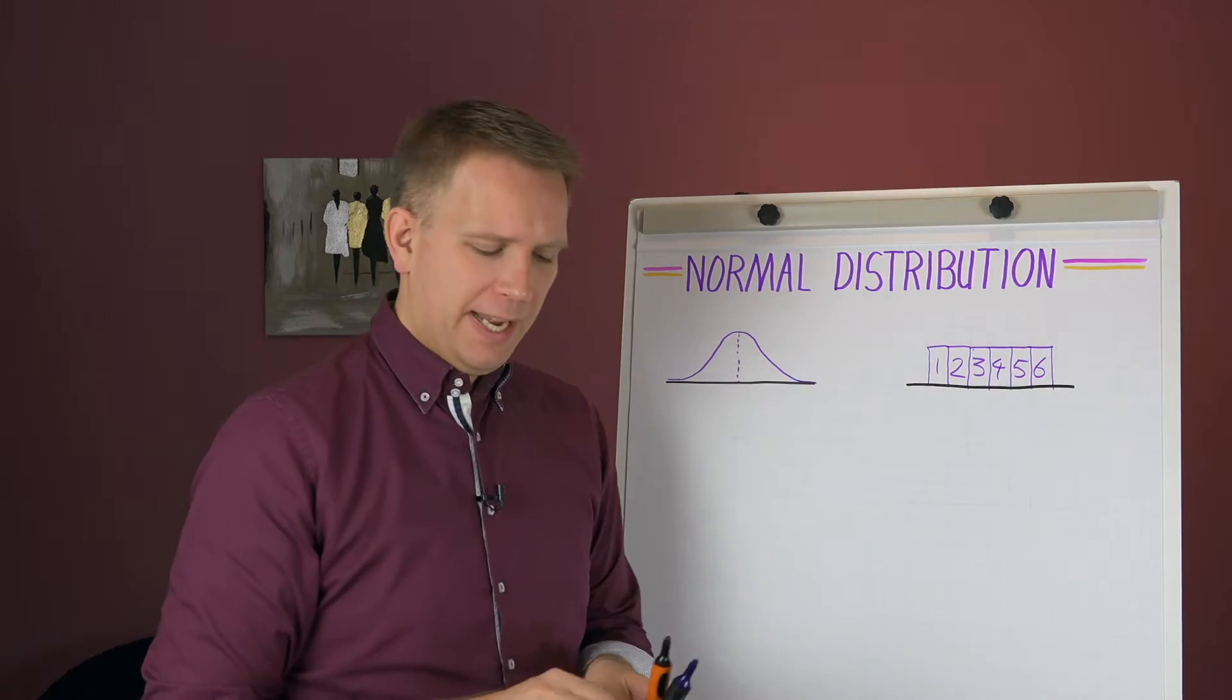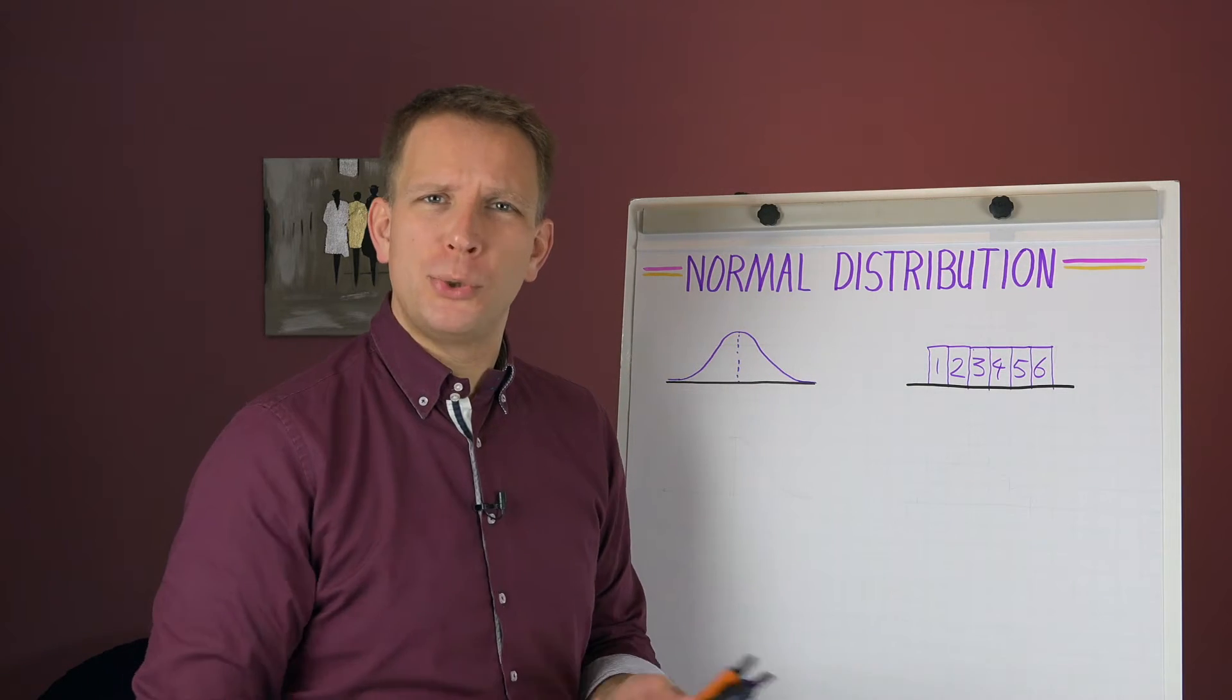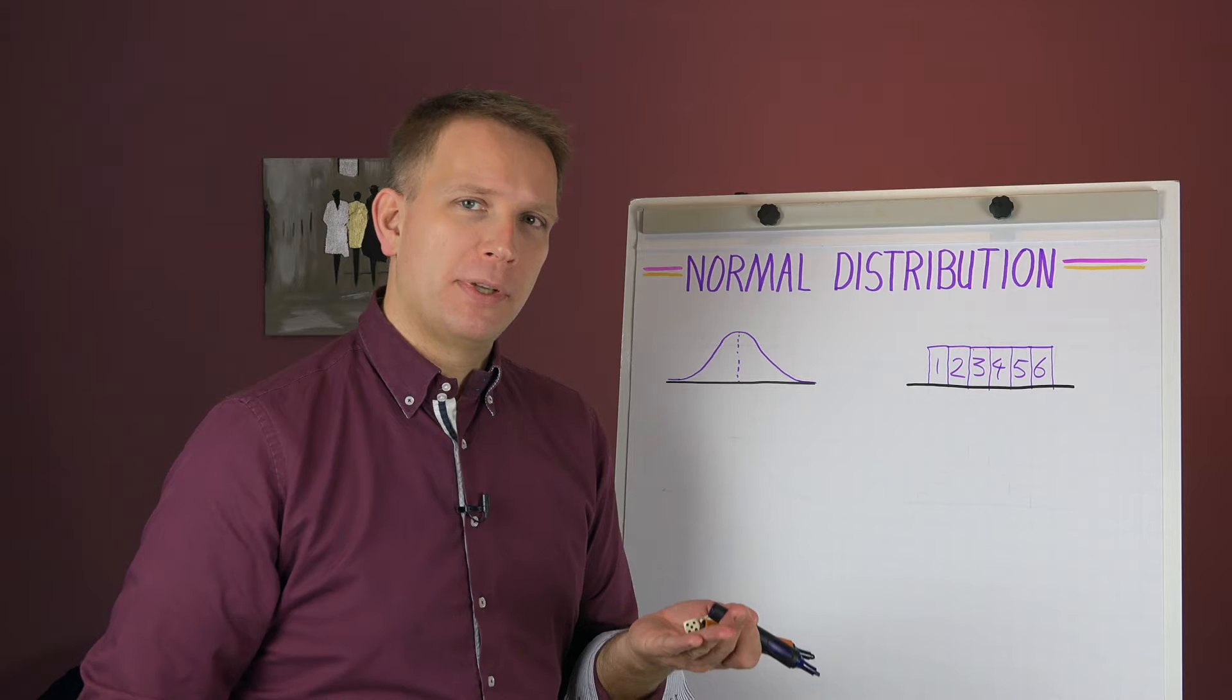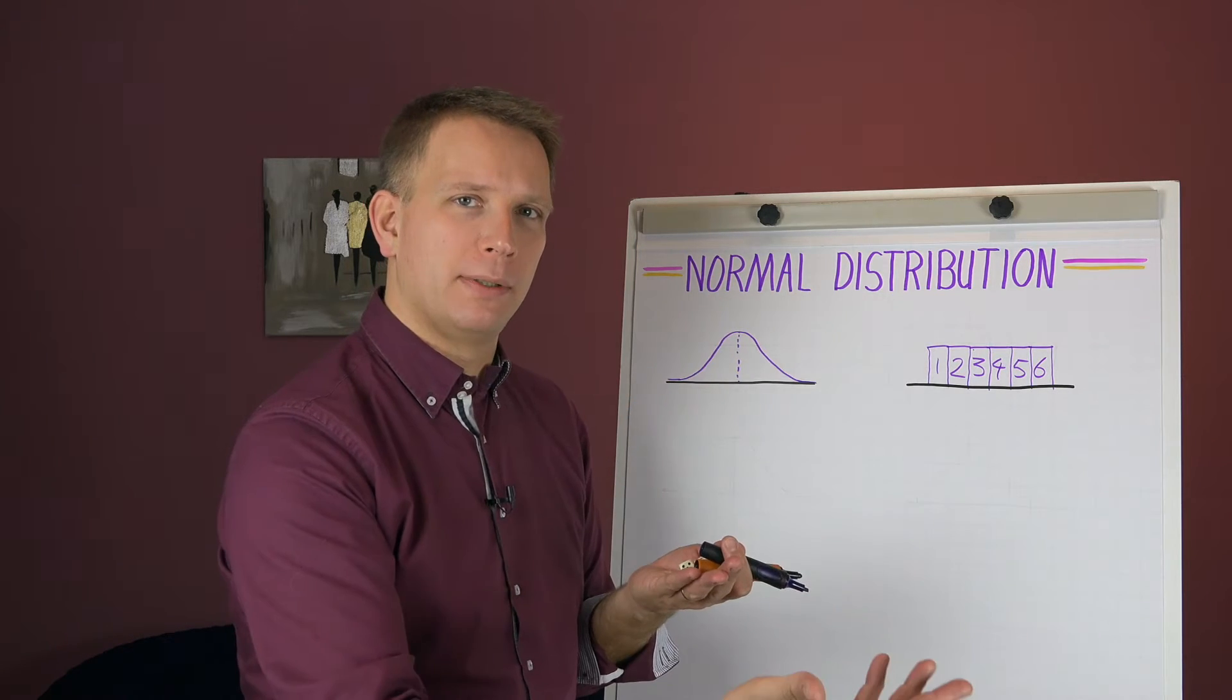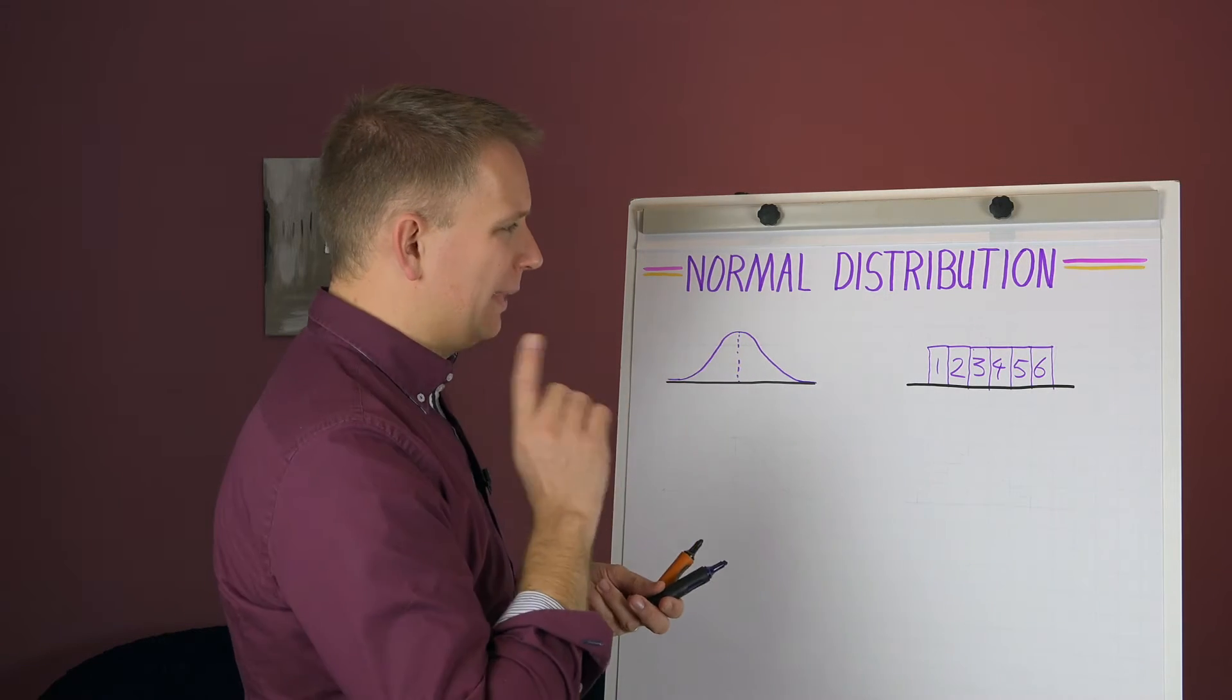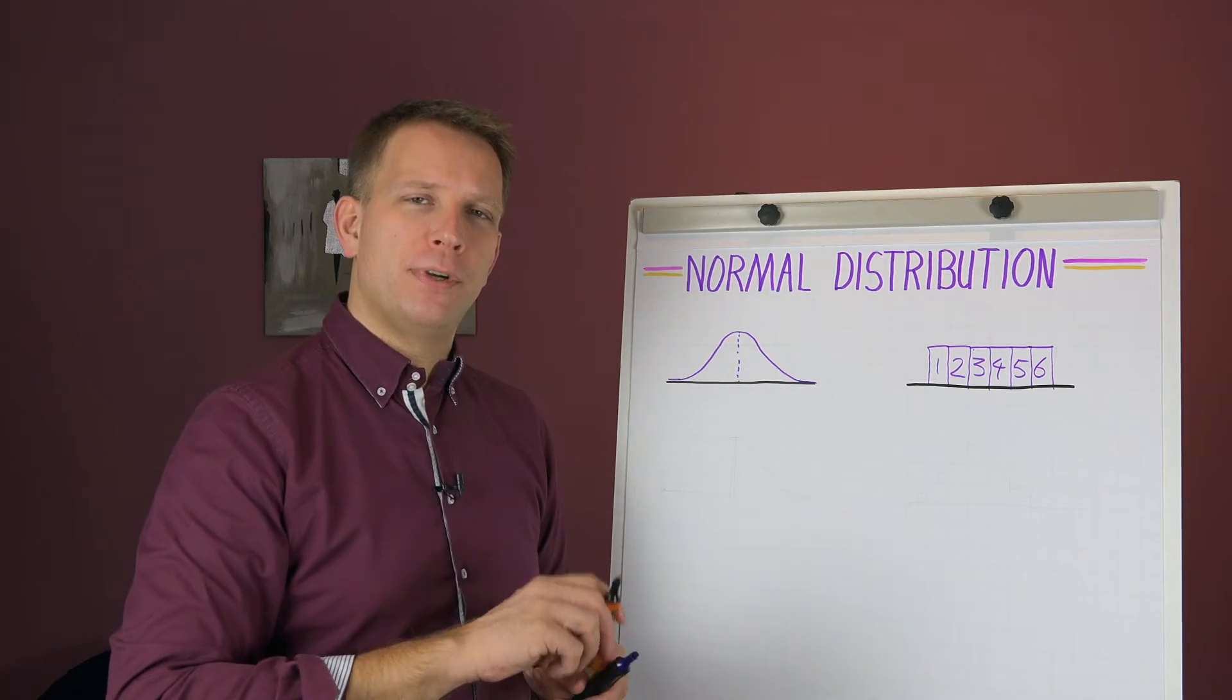Now, if I add one and we roll two dice, then I can get a bunch of numbers. I can get the numbers from 2 all the way up until 12.